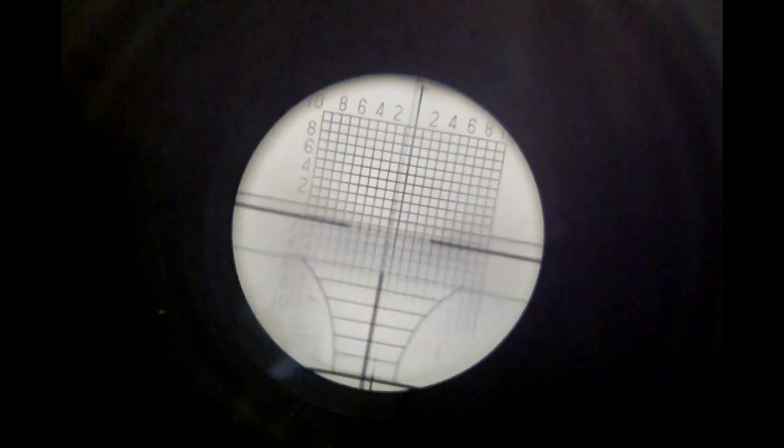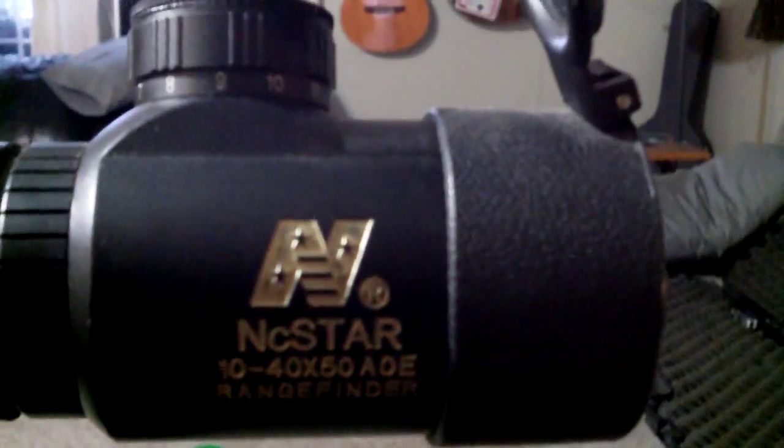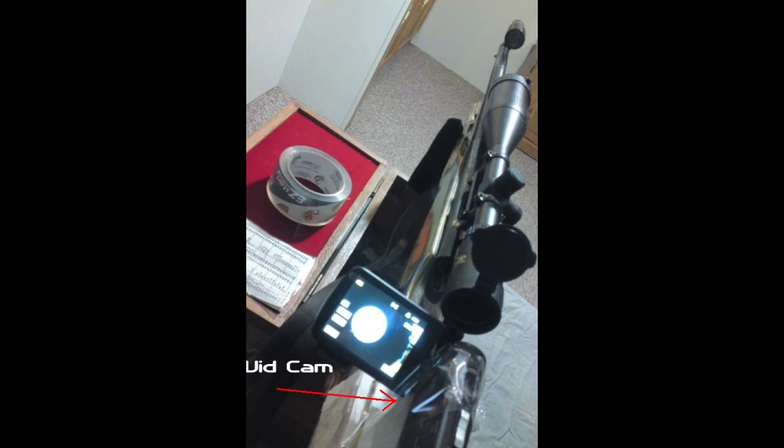Alright internets, I want to show you how to find a junk scope. I guess a lot of people could say that it says made in China, that's how you find it real easy. But here's an example of a junk scope in my opinion. What I've got here is the video camera looking through the scope at a target.